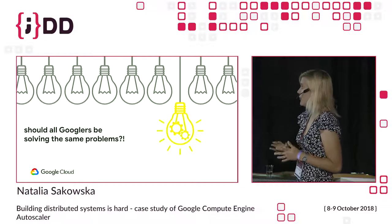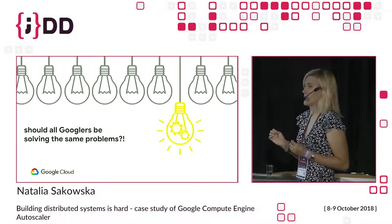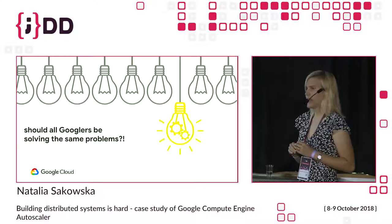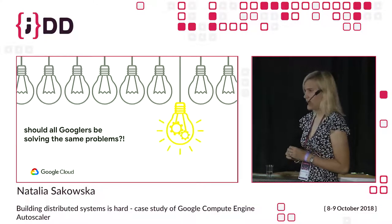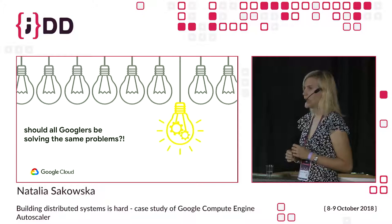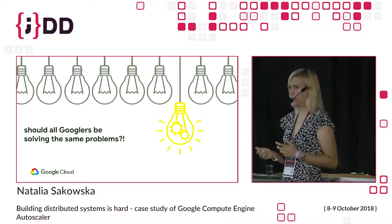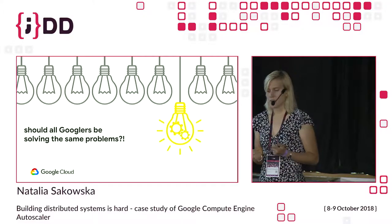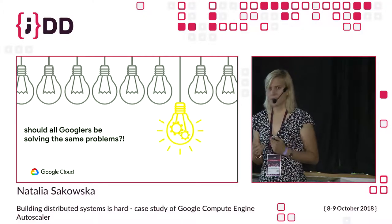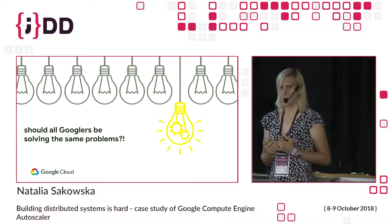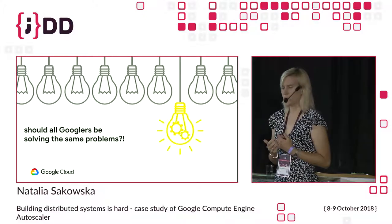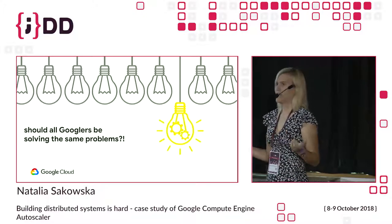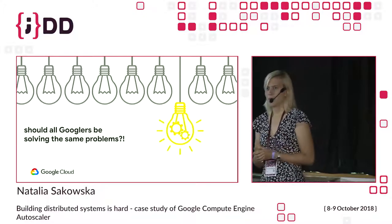The way Googlers use Borg is that we provide a declarative manifest where we specify the parameters we want a particular job to run with, and then everything happens automatically — the job is started and monitored all the time.